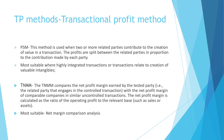The fourth method is the profit split method. The profit split method is used when two or more related parties contribute to the creation of valuable intangibles in a transaction. The profits are split between the related parties in proportion to the contribution made by each party.